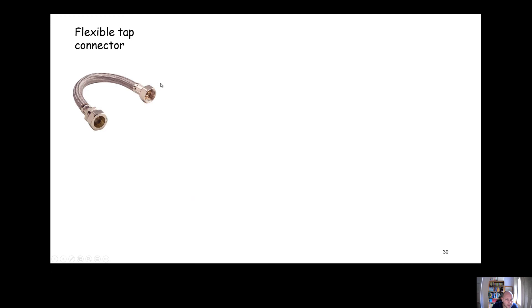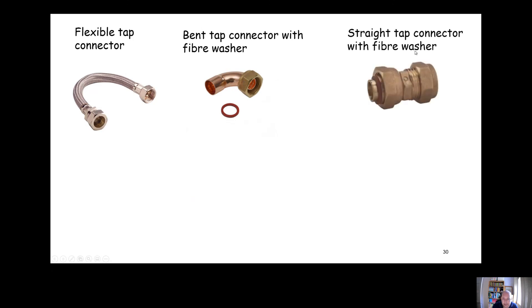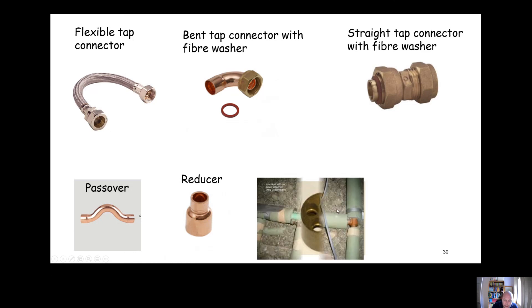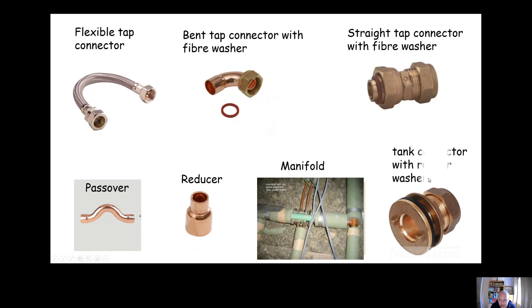A couple other key bits to look at: this is a flexible tap connector, this is a bent tap connector with the fiber washer there, you can see that's what keeps it watertight. Got a straight tap connector compression example here, a pass-over then just here, a reducer just here. This is a manifold. Anything that you use to connect several smaller pipes to one larger pipe would be known as a manifold. That's one worth remembering because it might come up in a couple of exams. And finally, this one here is a tank connector, a tank connector with a rubber washer there.